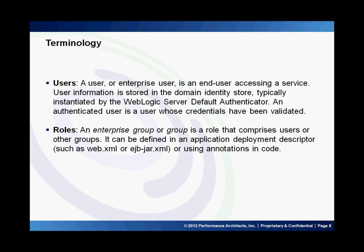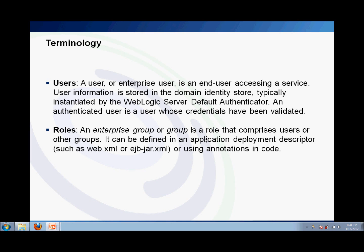I'm going to talk about some of the technologies we are going to use in OBIEE 11G security. The first one is users — this is the same as in 10G. By default, any user you create in WebLogic Server is stored in the default Authenticator, which is the embedded WebLogic Server. An authenticated user is a user whose credentials have been validated. A role is a collection of users, groups, and application roles themselves. Roles are specific to the application, defined by the policy, and are visible only when the application is running. Most importantly, these roles are used to make authorization decisions.